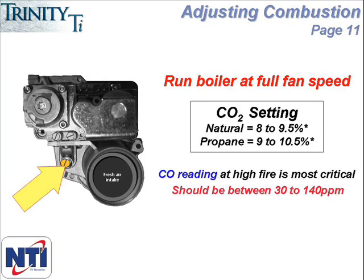Turning the screw clockwise will decrease the flow of gas, and counter-clockwise increases it. The typical adjustment for natural gas is less than one full turn either in or out, and for LP it is generally somewhere between one and three complete turns.